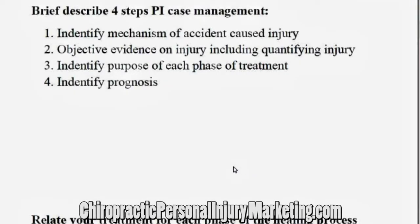The next step is to briefly describe the four steps of a personal injury case. Basically, when we look at a PI case — and we're just going to dumb it down — these are essentially the four steps. Number one: did that accident cause that injury? The correlation — did that accident cause the injury?